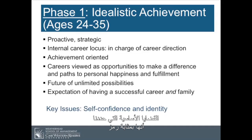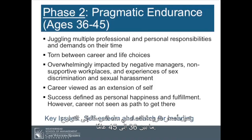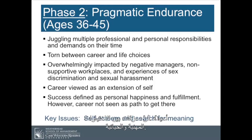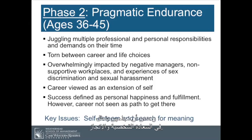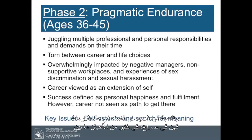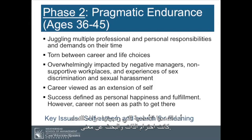In phase two, pragmatic endurance, women tended to be in the ages of 36 to 45. They were juggling multiple professional and personal responsibilities and demands on their time, often torn between career and life choices. They were impacted by negative managers, non-supportive workplaces, and experiences of sex discrimination or sexual harassment. They viewed their careers as an extension of self and defined their success as personal happiness and fulfillment. Interestingly, they did not see their career as a path to get there. For many women in this stage, there tended to be a struggle between balancing home life and family life on the one hand and work life on the other. The key issues these women faced were self-esteem and the search for meaning.